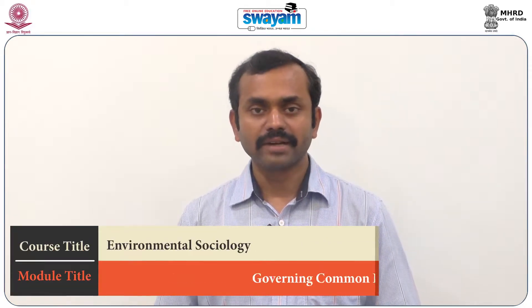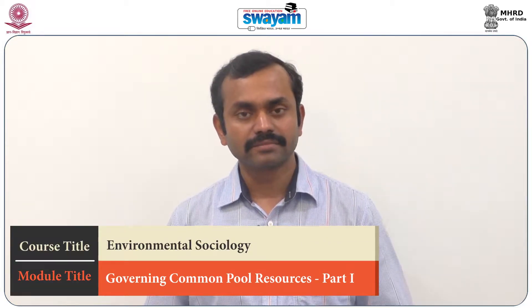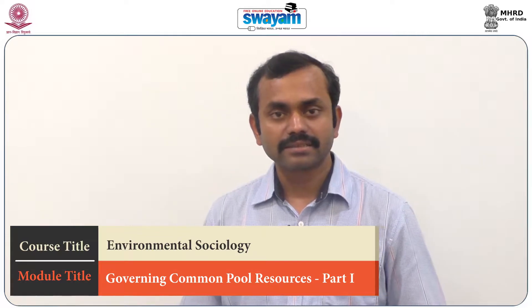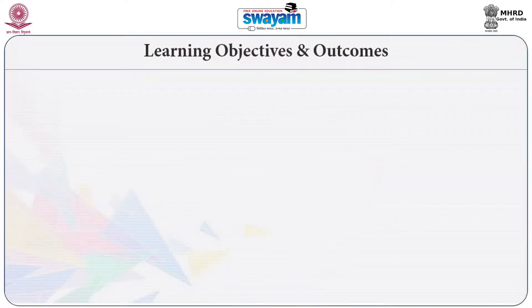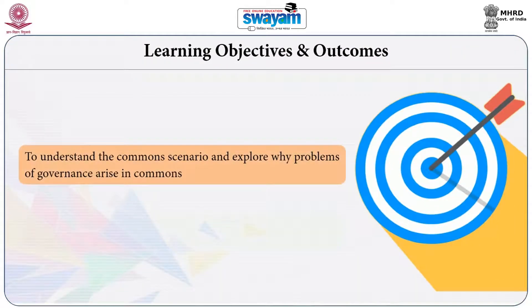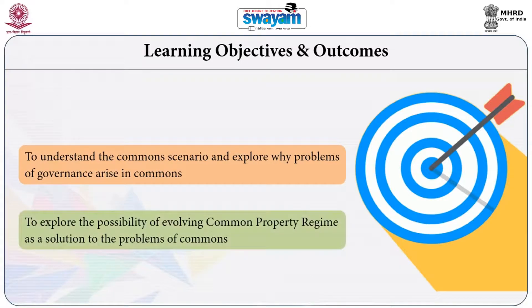Moving away from conflicts and contestations over nature, in today's class we will discuss governing common pool resources. We will discuss what common pool resources are and how they can be governed in a more effective and efficient manner. The core objective is to understand the common scenario, explore why problems emerge in governing the commons, and explore the possibility of evolving common property regimes as a solution.